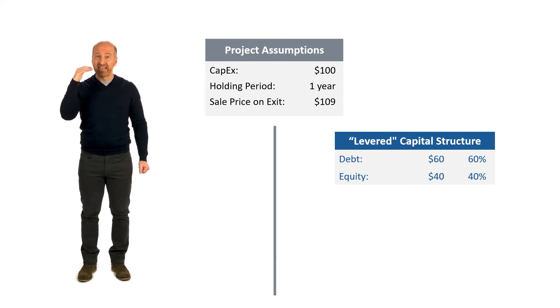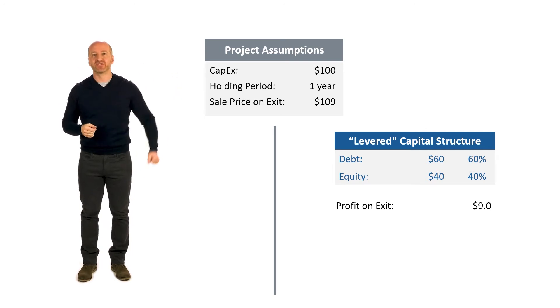We face that same $9 of profit on exit. By that, I mean after the debt has received its full repayment of $60 and the equity has received its money back, its $40, we've got the same $9 in profit.